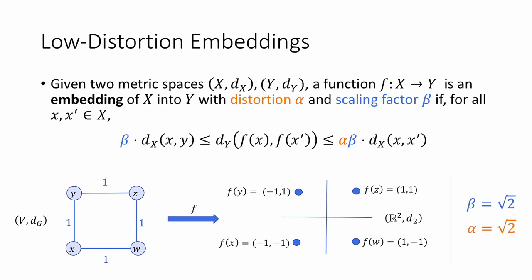So here's an example. Let's consider that same square you just convinced yourself was impossible to embed isometrically into L₂. So while we can't embed it isometrically into L₂, it turns out we can embed it into L₂ with distortion √2. More precisely, if we just embed it in the natural way, so the four points of the square go to the points (±1, ±1) here, then you can check that this is an embedding with scaling factor √2 and distortion α, which is also equal to √2.